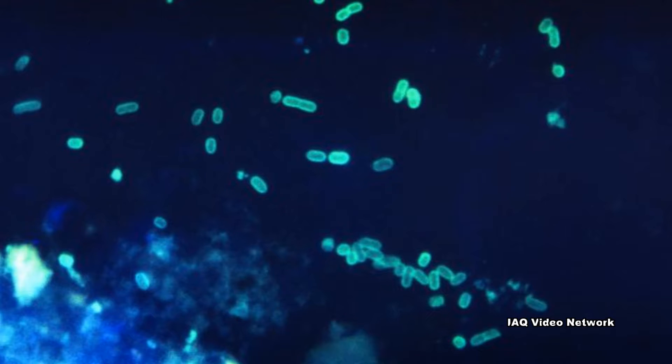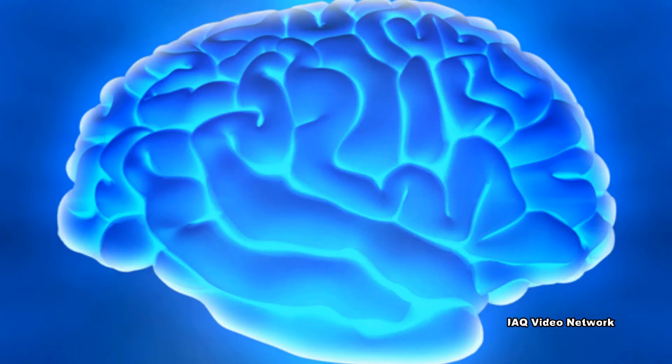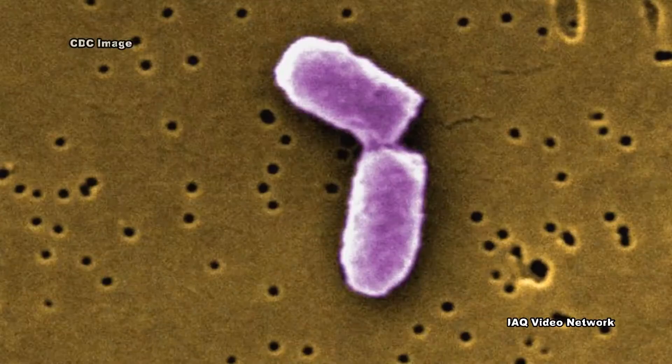Meningitis is an infection of the protective membranes covering the brain and spinal cord. The condition can be caused by a viral, fungal, or bacterial infection.